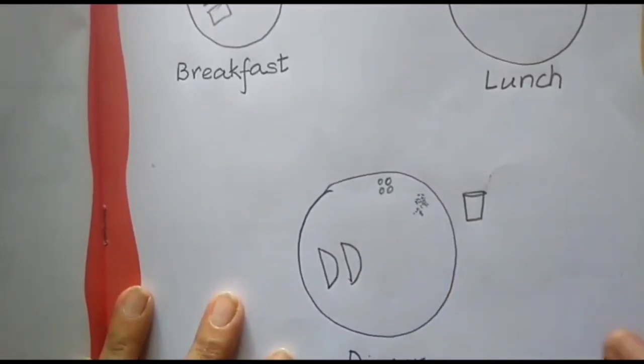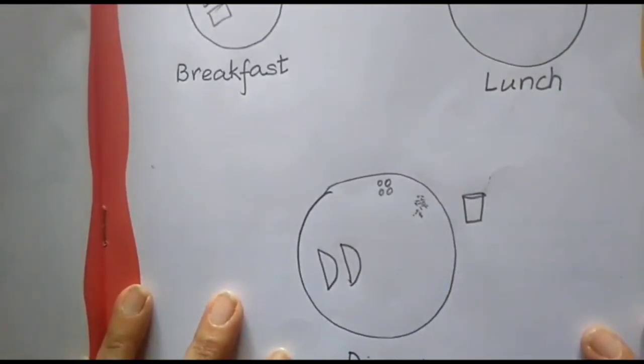So in this way you have to draw your breakfast, lunch and dinner. Whatever food items you want to have and then you tell your mama or papa which one you like the most and why.